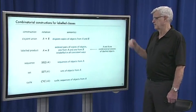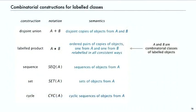The semantics is very natural. The disjoint union is just copies of objects — a pair that's a copy of objects from A and B. Labeled product is: take one from A, one from B, relabel them in all consistent ways. Sequence is a sequence of objects, set is a set, and cycle is a cyclic sequence.